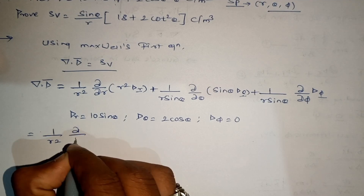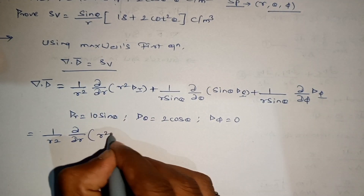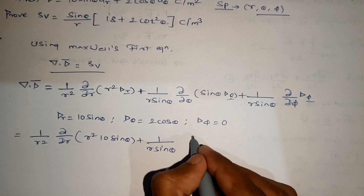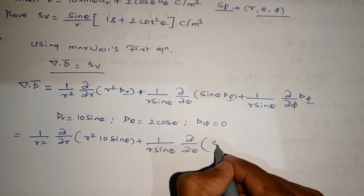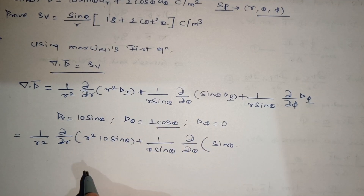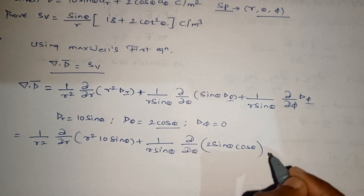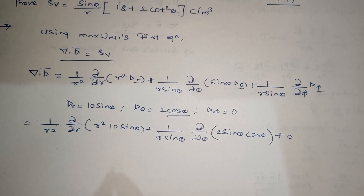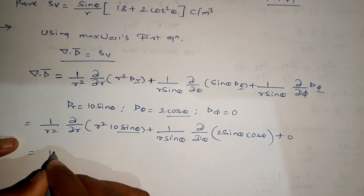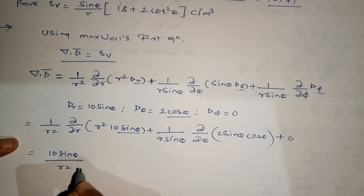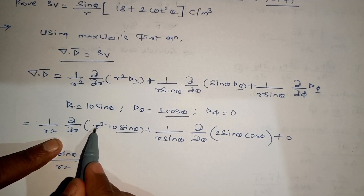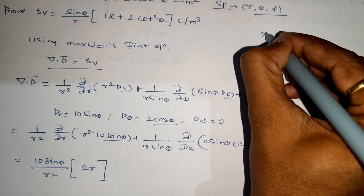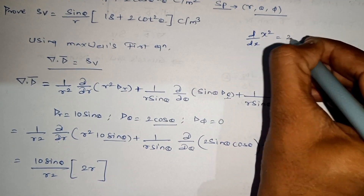Substituting these values: (1/r²)(∂/∂r)(r² · 10 sin θ) plus (1/(r sin θ))(∂/∂θ)(sin θ · 2 cos θ) plus zero. Since 10 sin θ is constant with respect to r, the first term gives (10 sin θ / r²) · 2r, which simplifies to 20 sin θ / r.